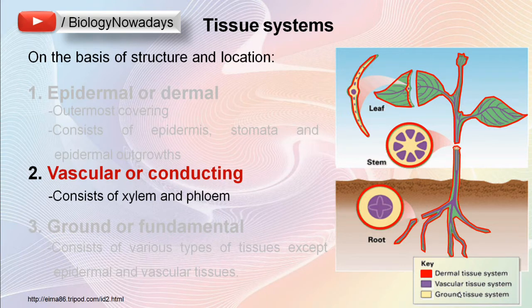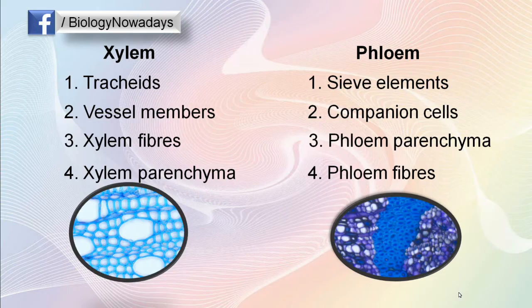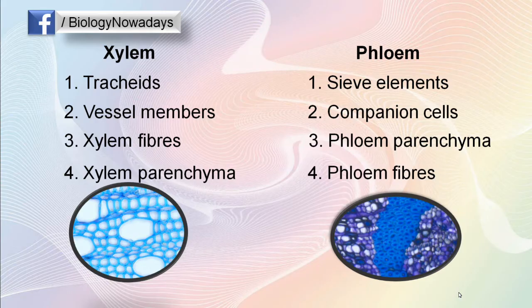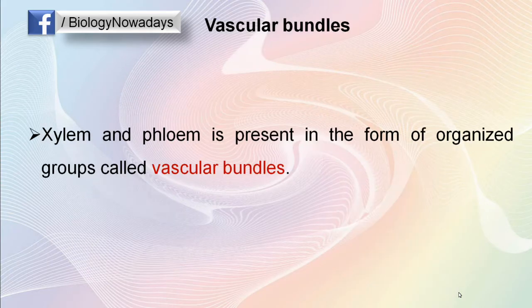The vascular tissue system consists of the complex tissues xylem and phloem. As you know, xylem and phloem are the conducting tissues for water and food respectively. You have already learnt about the components and functions of both xylem and phloem. Today, let's learn about how they are arranged in plants. The vascular tissue consisting of xylem and phloem is present in the form of organized groups called vascular bundles.